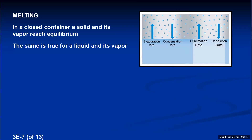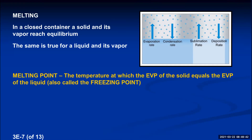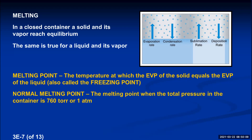If you have liquid and solid together in one container, both reach equilibrium with their vapor. By the transitive property: liquid is in equilibrium with vapor, vapor is in equilibrium with solid, therefore solid is in equilibrium with liquid. This happens only at the one temperature where the vapor pressures of liquid and solid are equal — the melting point or freezing point, depending on direction. The normal melting point is defined at a total pressure of 760 torr (1 atmosphere).